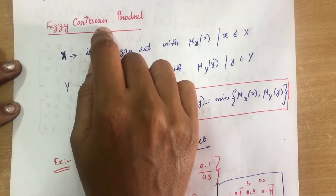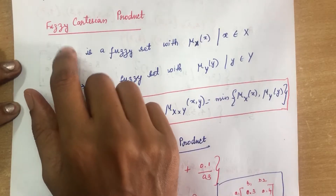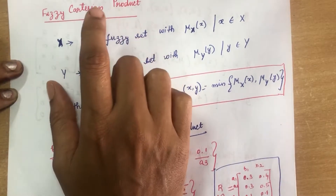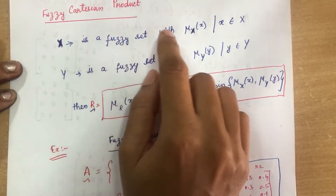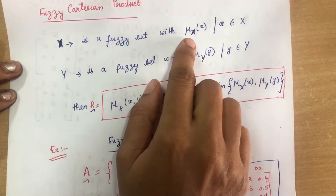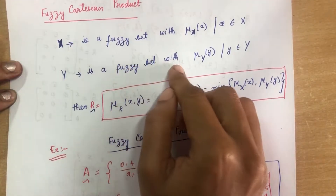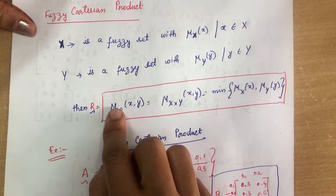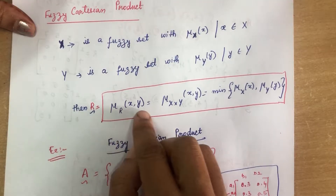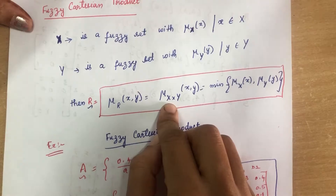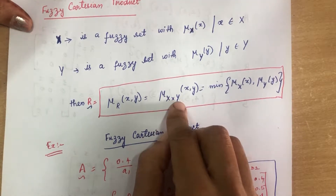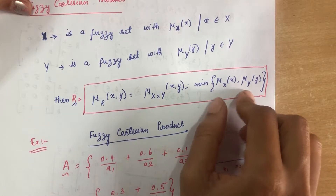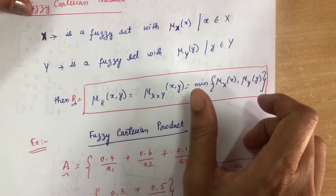Before going into fuzzy relations, I will first teach you what is fuzzy Cartesian product. We have already seen Cartesian product in classical sets, and now we are going to see it in fuzzy sets. Let us assume that X is a fuzzy set with membership function mu_X(x), and Y is a fuzzy set with membership value mu_Y(y). The Cartesian product is represented by R, so mu_R(x, y) = x cross y of (x, y), which is the minimum of the membership value of x and the membership value of y.